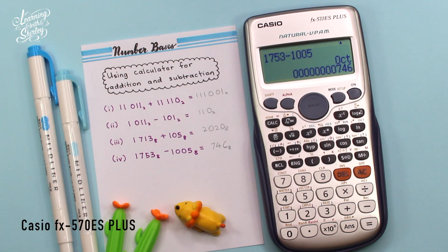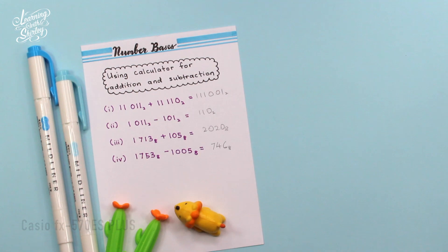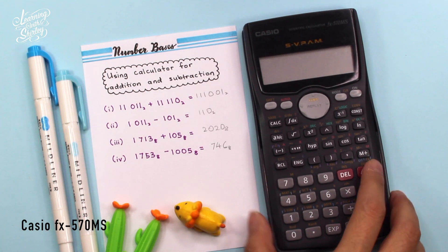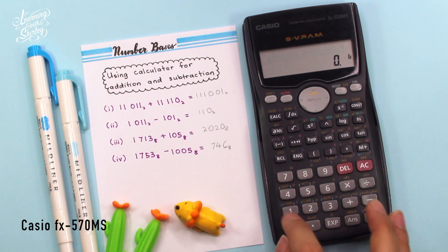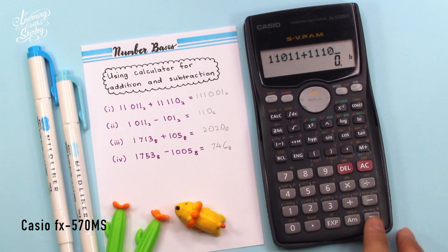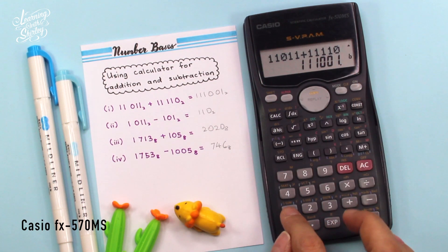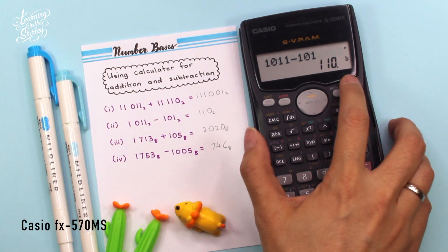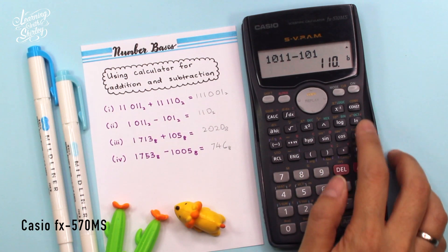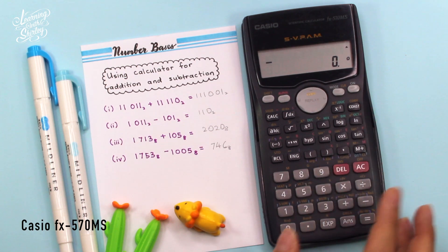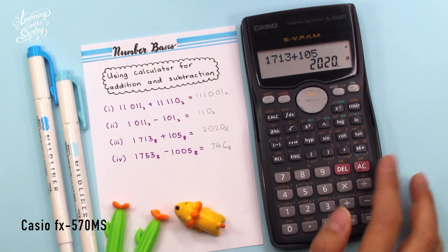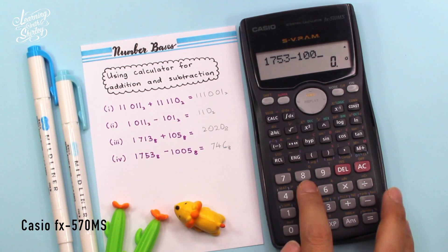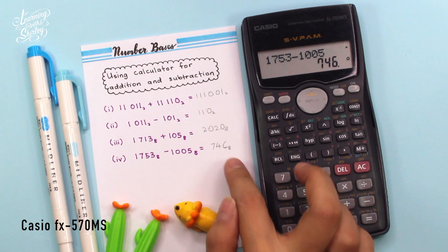Let's try using another model calculator. Click MODE, then MODE again and press 3. For base 2, press binary. Enter 11011 plus 11110 — the answer is 111001. Next, 1011 minus 101 — it's 110, which is base 2. For base 8, press OCT. Enter 1713 plus 105 — it's 2020. And 1753 minus 1005 — it's 746 base 8. So it's correct.